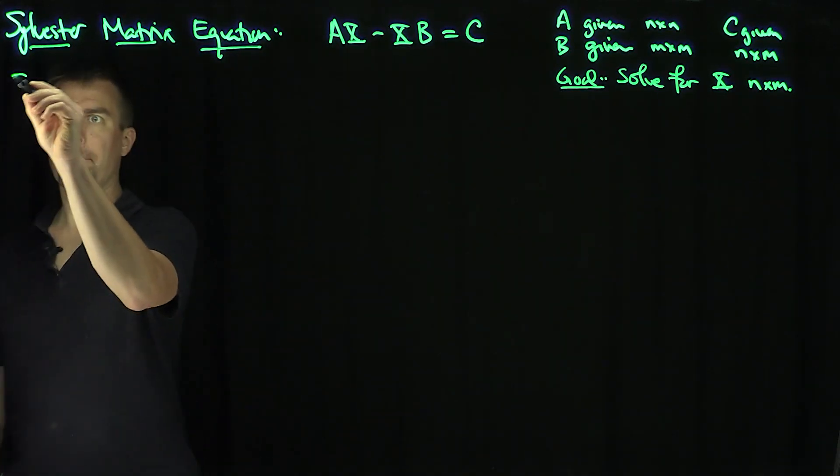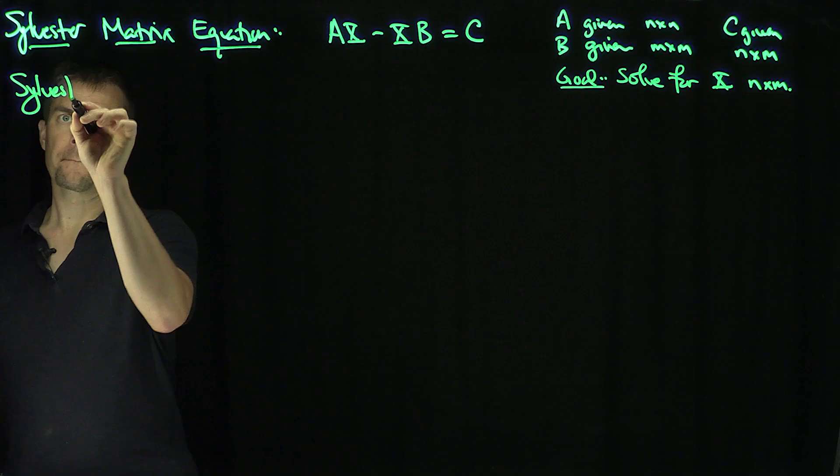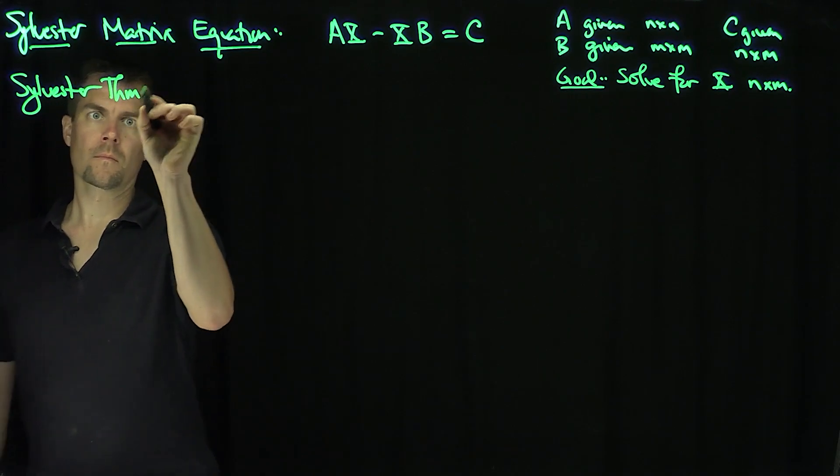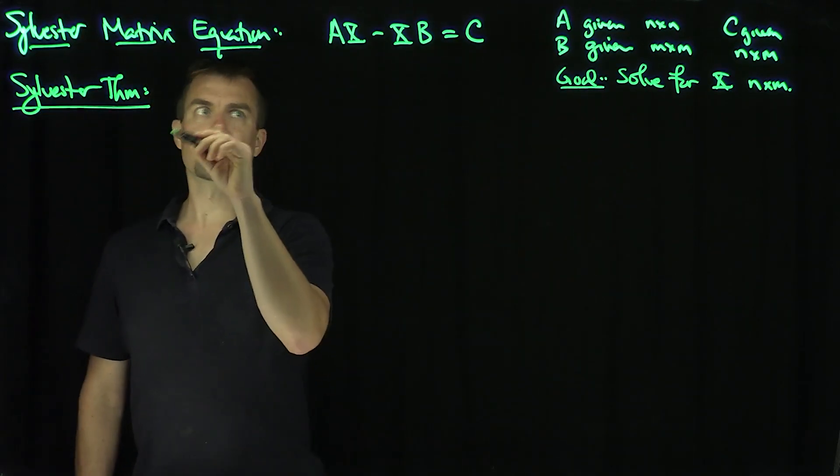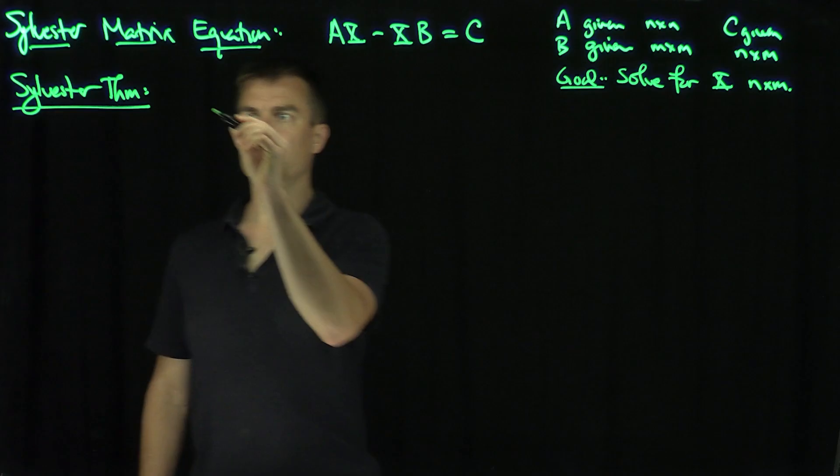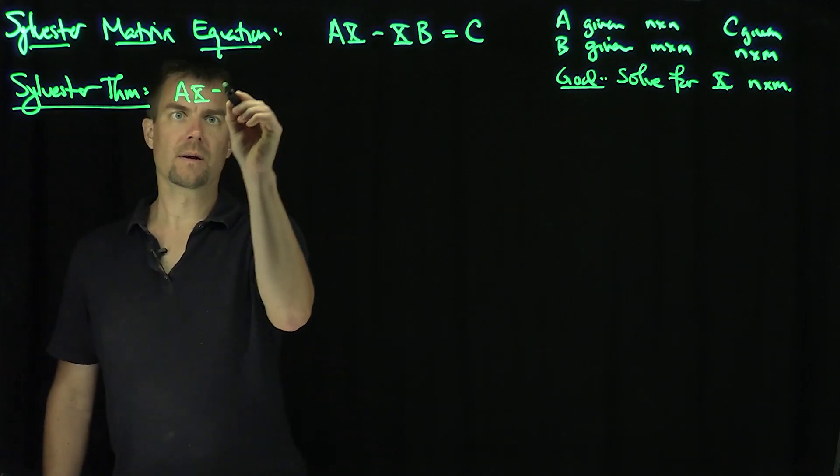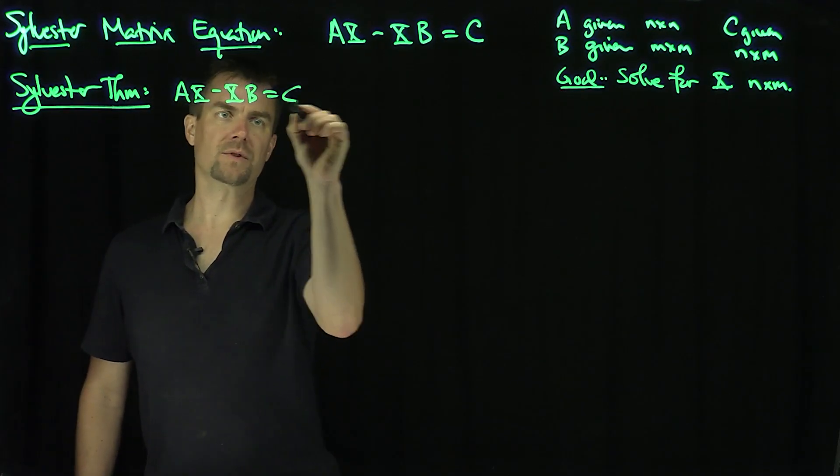The Sylvester theorem states that this equation, let's call it star, AX minus XB equals C,